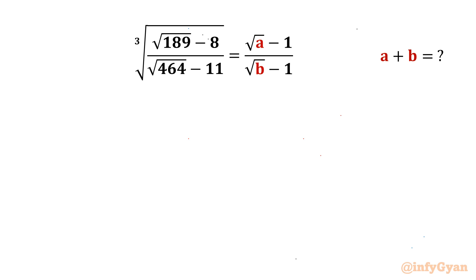Welcome back to Infigr, my dear friends. In today's video we have another very interesting question from RadicalMaps. Here we have to evaluate the expression a plus b, given that the cube root of square root of 189 minus 8 over square root of 464 minus 11 equals root a minus 1 over root b minus 1.